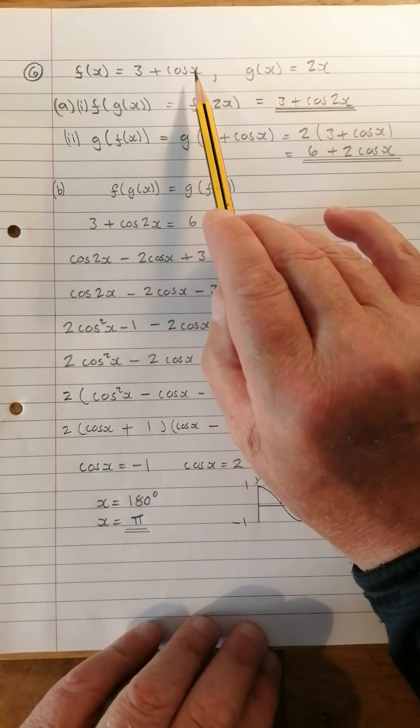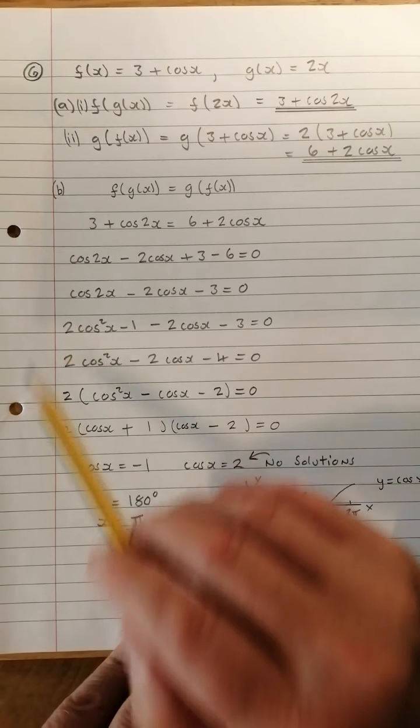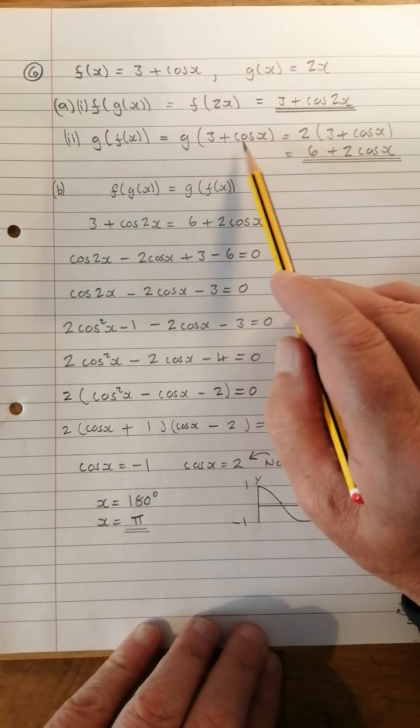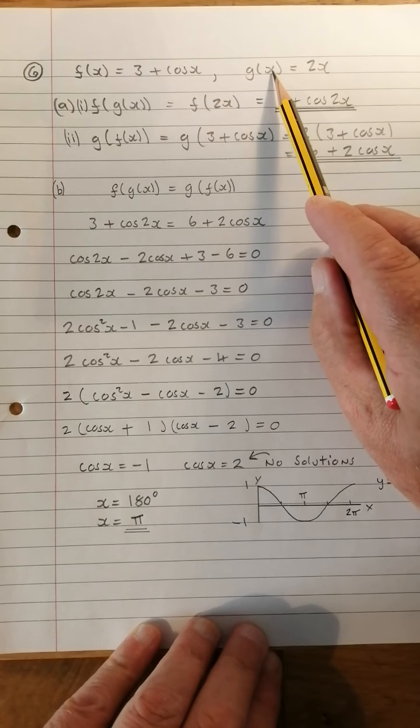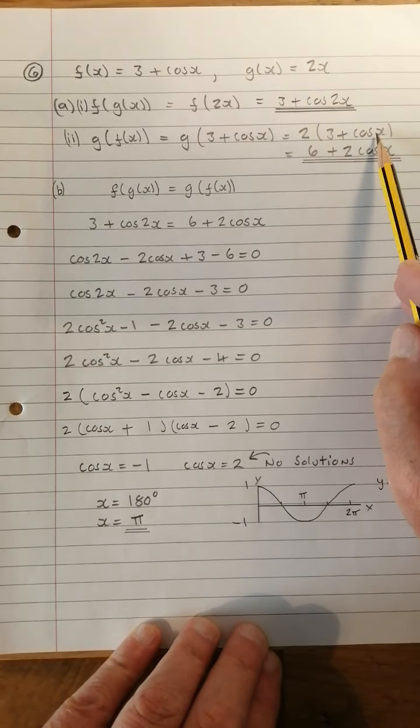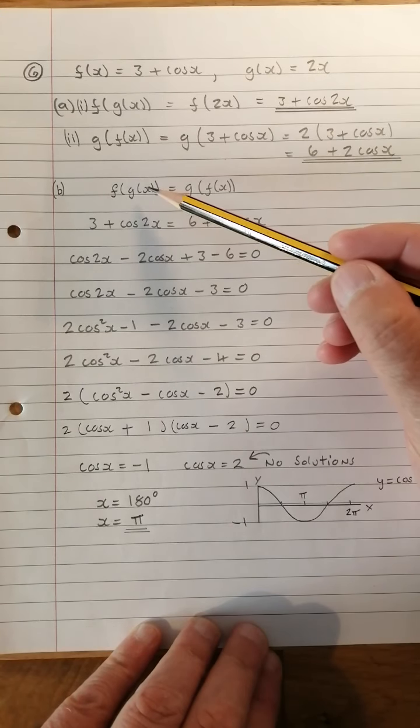g of f of x for part 2 is g of 3 plus cos x. What does function g tell you? Whatever you're putting in, you have to double it. So you have to double 3 plus cos x, and that gives you 6 plus 2 cos x. There we have it. For part b you have to set one equal to the other and solve it.